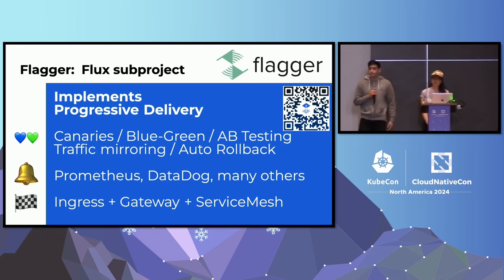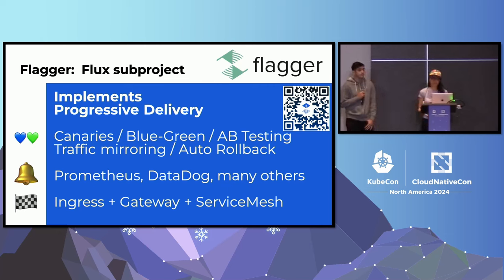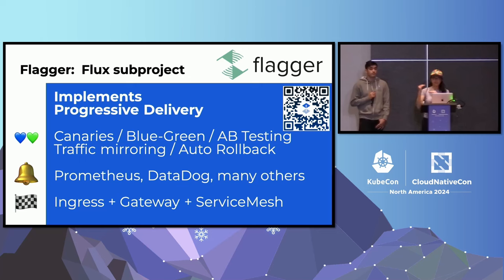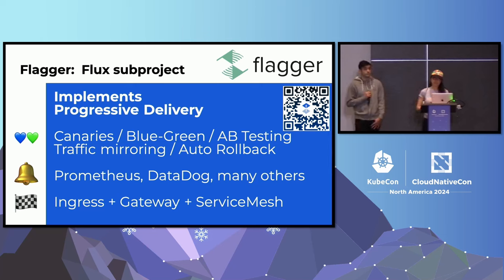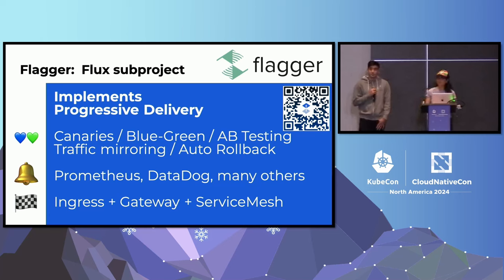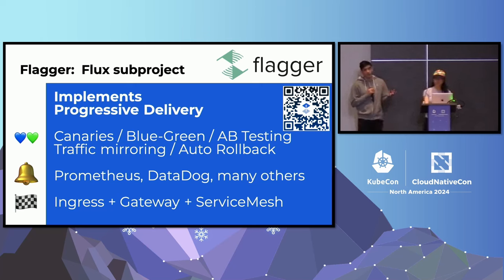A bit about Flagger, which we mentioned was a subproject of Flux. Flagger implements progressive delivery, which has now become a fairly standard industry term that is the umbrella for canaries, blue-greens, A/B testing, and other capabilities. The way that Flagger works is that you set the threshold of success, and it will keep checking to see if you've met that threshold, progressively delivering until the implementation is completed. It takes metrics from sources like Prometheus, Datadog, and others to see whether you've met the threshold. These sophisticated patterns can be implemented on your Kubernetes cluster, regardless of whether your infrastructure is using the older Ingress API, the newer Gateway APIs, or some bespoke service mesh.